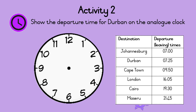The departure time for Durban is 25 minutes past 7 in the morning. So, the minute hand should point to 5, showing 25 minutes. And the hour hand should point almost halfway between 7 and 8. Well done!